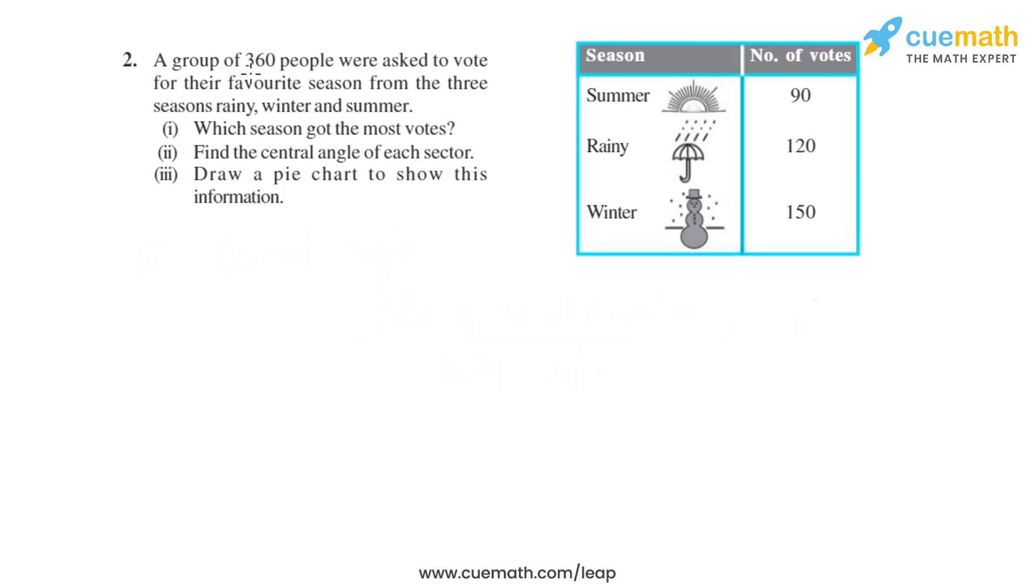Question 2 of this exercise says a group of 360 people were asked to vote for their favorite season from the three seasons: rainy, winter, and summer. Which season got the most votes? As we look into the data that is given in the question...